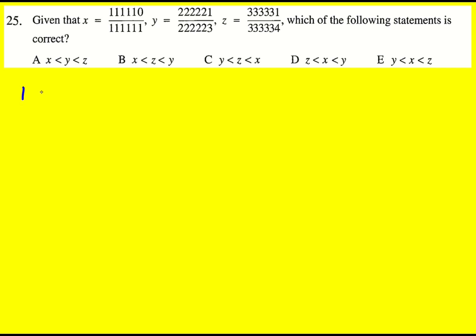So 1 minus x is actually just going to be 1 over 111,111. I'll just leave that there for the moment. 1 minus y is going to be 2 over 222,223. And then 1 minus z is 3 over 332,334.